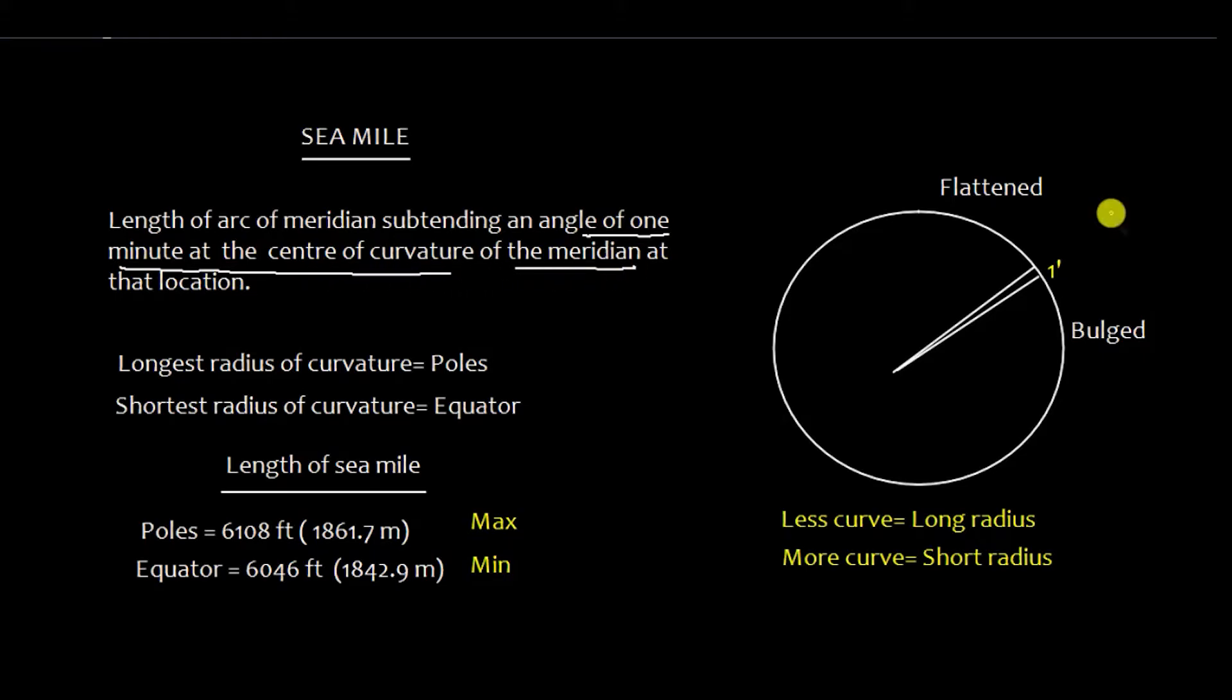Earth is not spherical. It is flattened at the pole here and the bulge at the equator. The radius of curvature will be different and hence the length of the C-Mile is different.